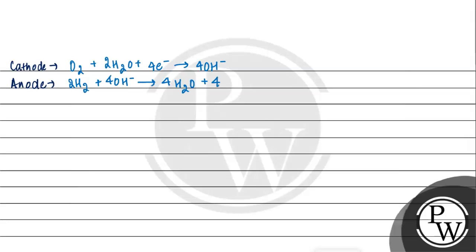We will add both, so our net reaction will be 2H2 plus O2 gives 2H2O. Here 4 OH negative ions cut and 4 electrons cut, so our net reaction is now described.